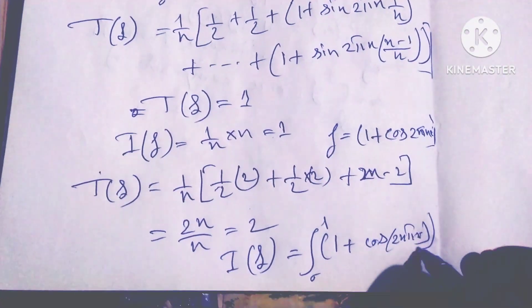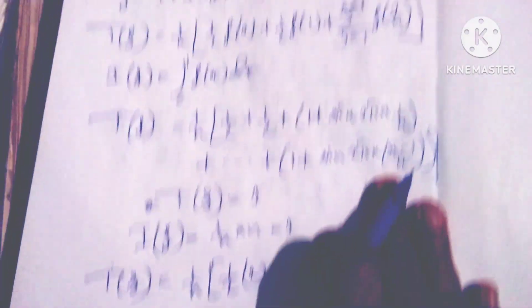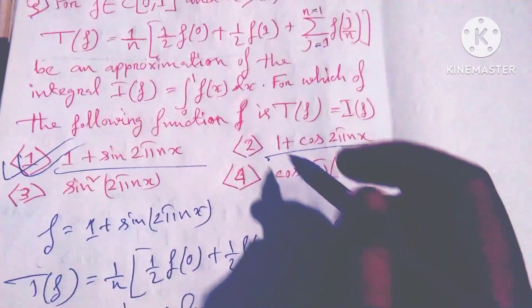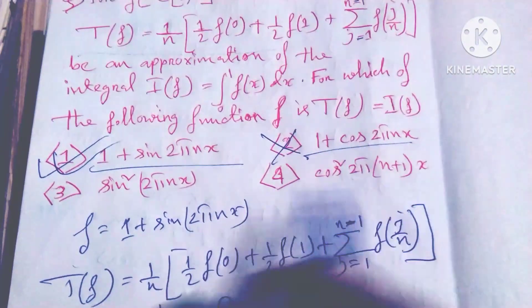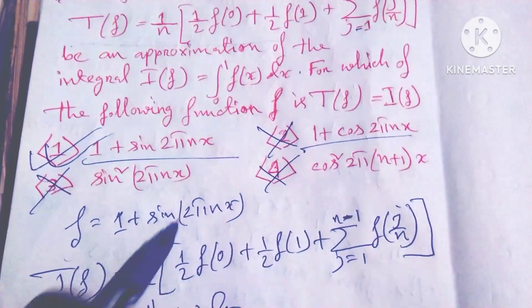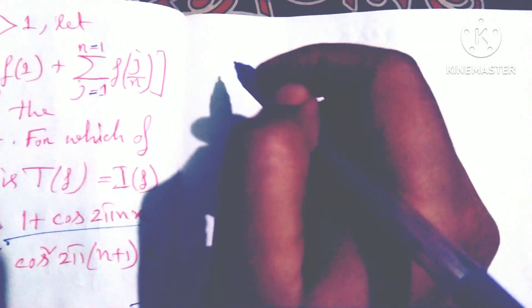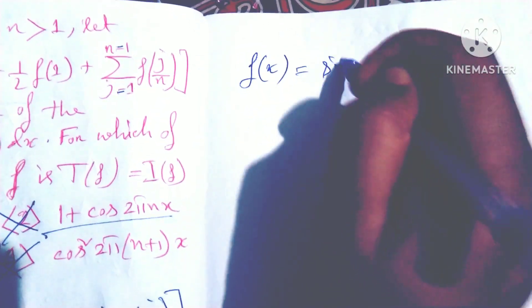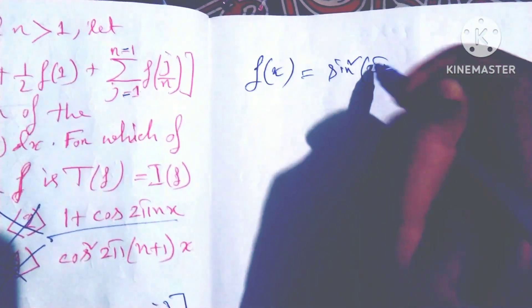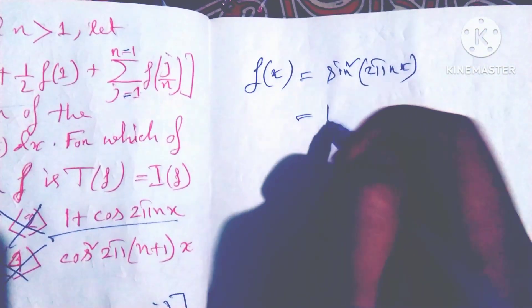And if I(f), the integration from 0 to 1 of 1 plus cos 2nπx dx equals 1. So this is not equal, so number 2 is wrong. Similarly we can show number 3 and 4 is also wrong because f(x) is equal to sine squared 2πnx...